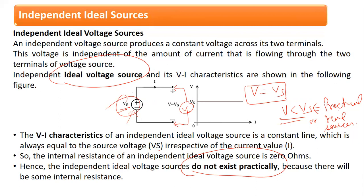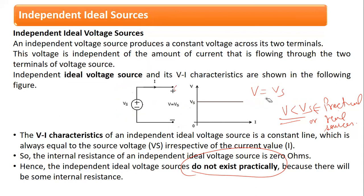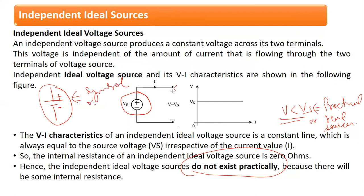Now let us look at the symbolic representation. The symbol for a voltage source is shown here. There is also another way to represent a voltage source — two parallel lines, one long and one short. The long leg is positive and the short leg is negative. This is the symbol of a DC voltage source. The plus sign indicates positive polarity and the minus sign indicates negative polarity.